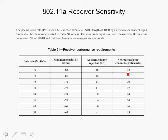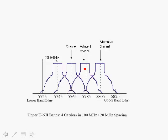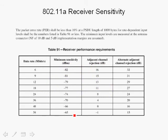For the alternative channel, it can be up to 32 dB higher than the desired channel, compared to 16 dB for the adjacent channel, and we still have to meet the minimum sensitivity requirements. The reason is that the analog baseband filter in the radio can filter out the alternative channel more effectively than the adjacent channel, which we will discuss further.